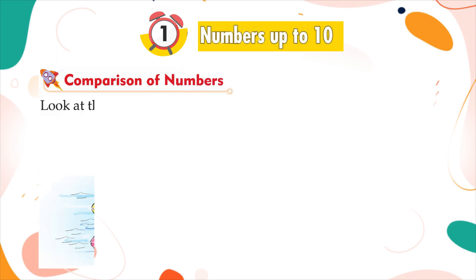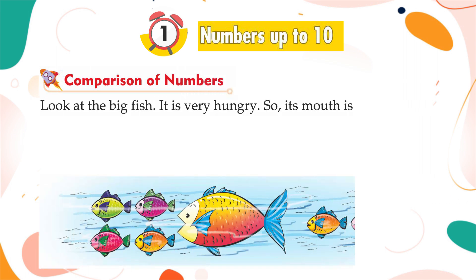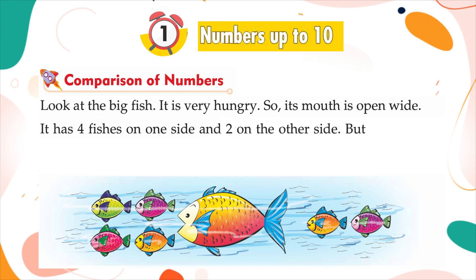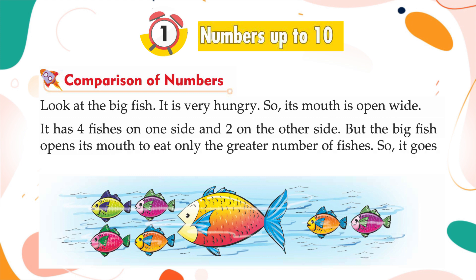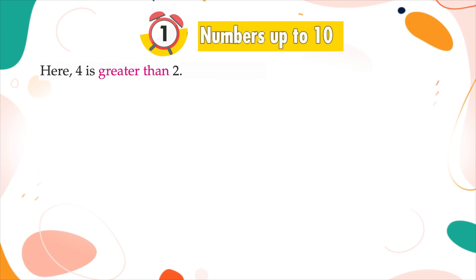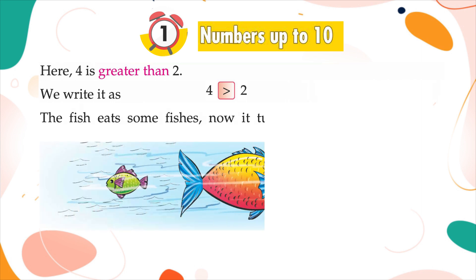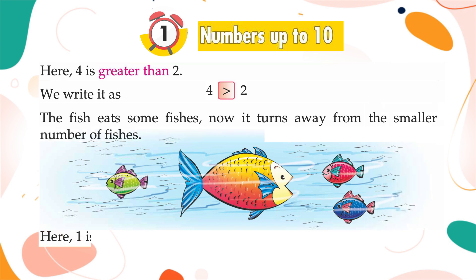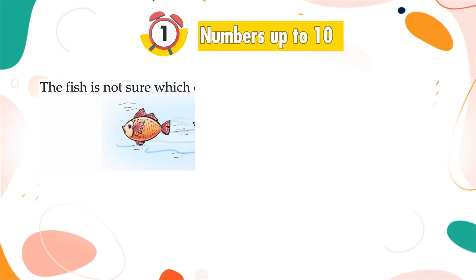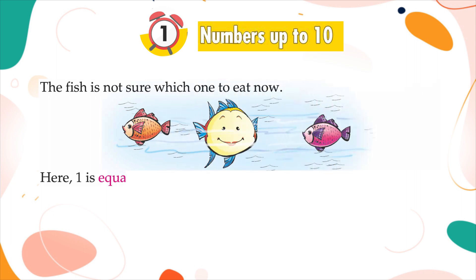Comparison of numbers. Look at the big fish — it is very hungry, so its mouth is open wide. It has four fishes on one side and two on the other. The big fish opens its mouth to eat only the greater number of fishes, so it goes for the four fishes. Here, four is greater than two; we write it as 4 > 2. Now one is smaller than two; we write it as 1 < 2. When one is equal to one, we write it as 1 = 1.